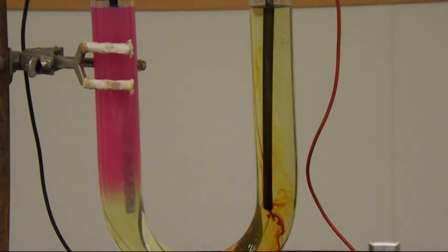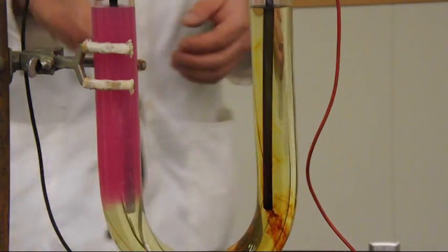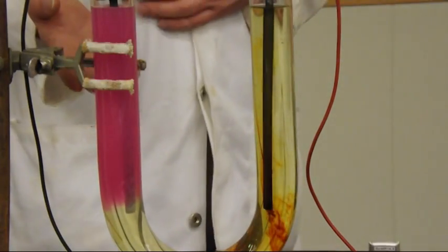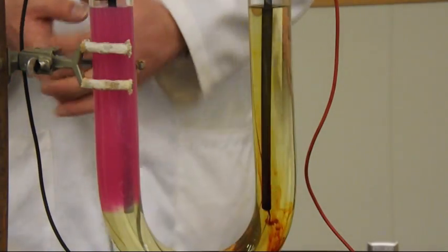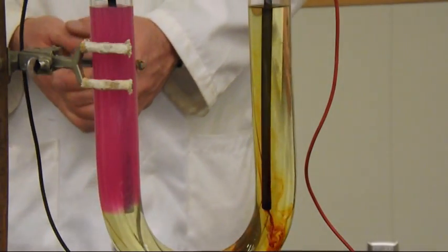We have a pink color being formed there. That was the acid base indicator indicating that we've got a basic solution now being formed. So off of the one electrode we've got a gas bubbling off and a basic solution being formed. Off of the other one we've got a brown iodine solid being formed as it goes down.